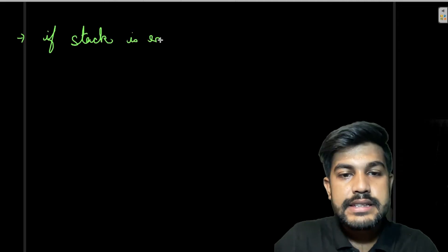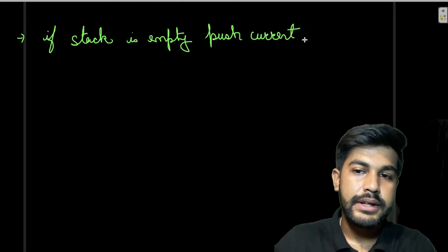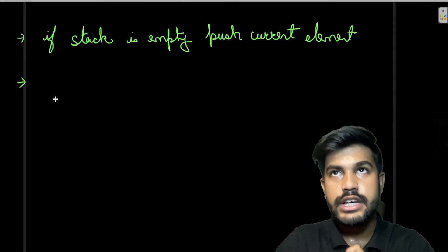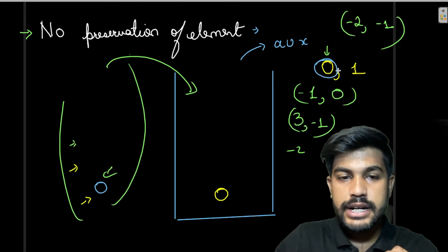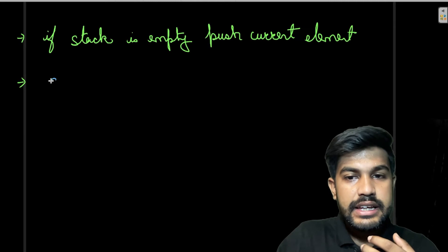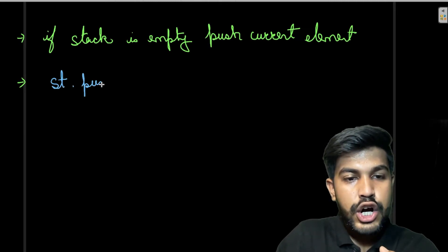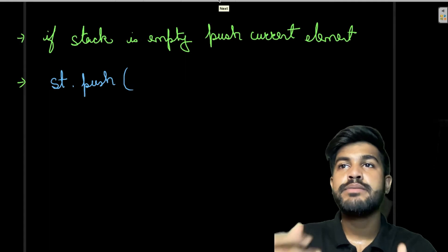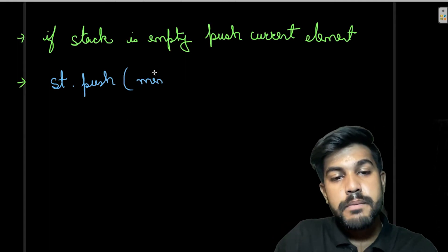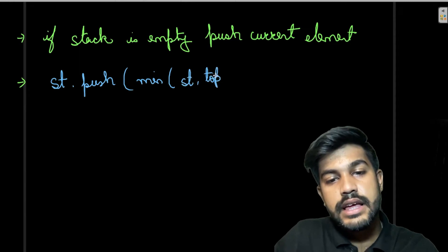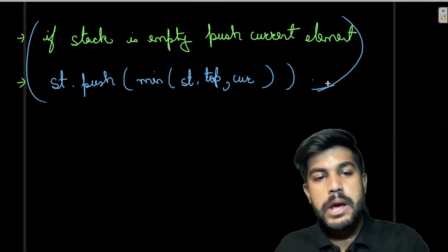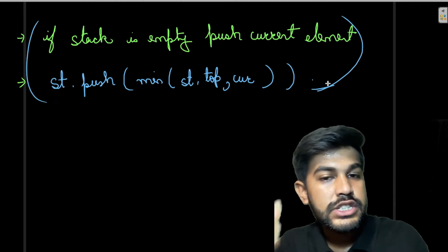The algorithm logic is: if the stack is empty, push the current element. If the stack is not empty, push the minimum of the top element and the current element — i.e., push min(st.top(), current element). This stores the running minimum at each point. Note that the original elements are lost in this approach.